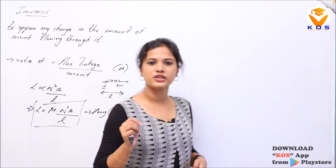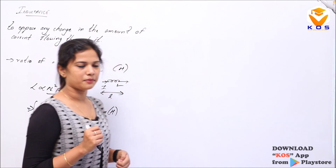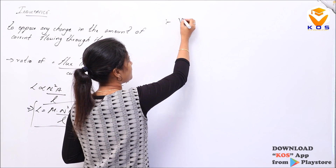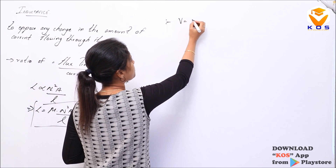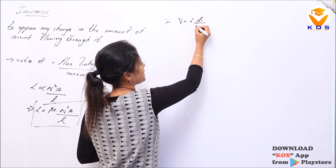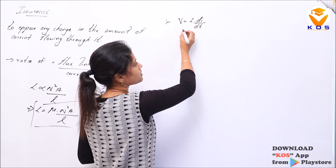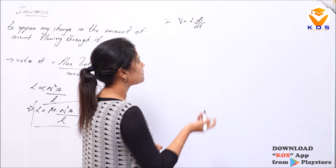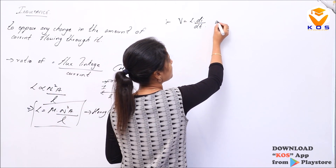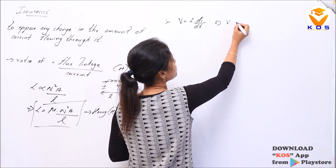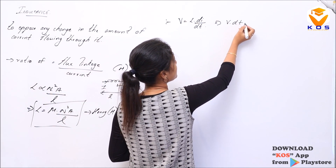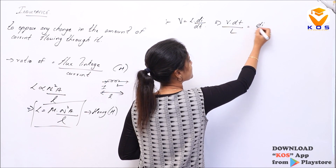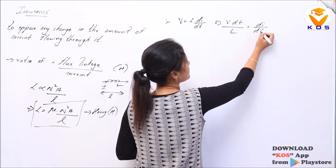The relationship between voltage and current for an inductor: voltage V is equal to L times di/dt. Through cross-multiplication, V times DT divided by L equals di.